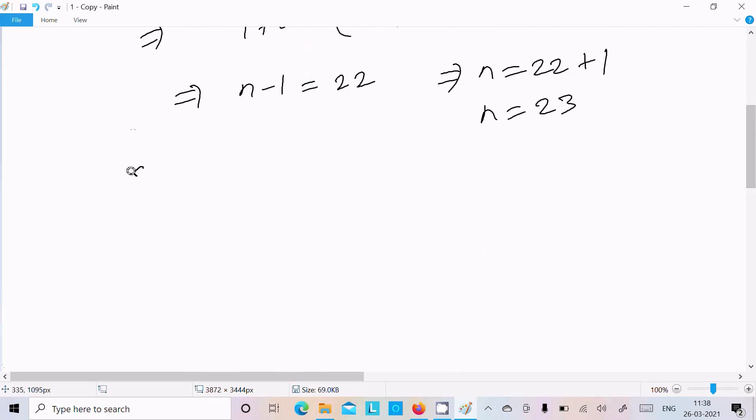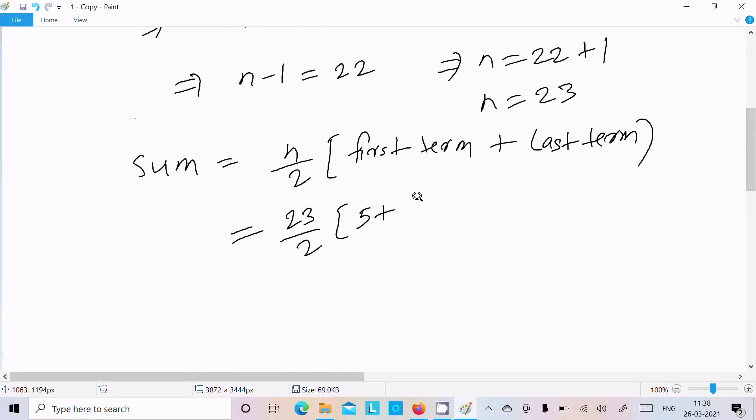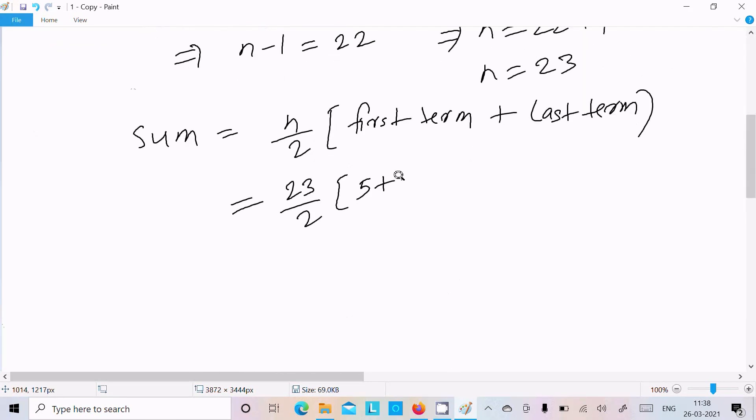Now here, sum formula we know: n by 2 times (first term plus last term). This cancels on 22, and now 23 by 2 times (5 plus 181), which is 23 by 2 times 186. So it cancels 9 times and 3. Now here 23 into 93 you need to multiply.